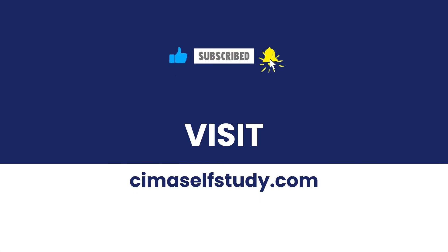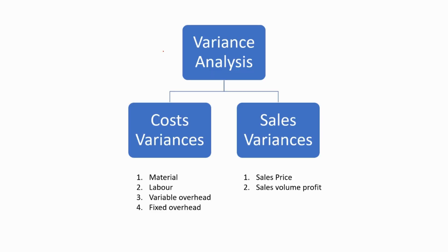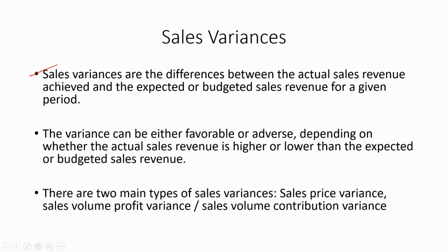In this video, I am going to discuss about sales variances. As we know, we can divide variance analyses into two parts: cost variances and sales variances. Under sales variances, we will discuss sales price variance and sales volume profit variance. Sales variances are the differences between the actual sales revenue achieved and the expected or budgeted sales revenue for a given period — simply, the difference between actual and budgeted sales revenue.